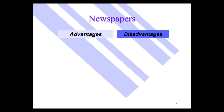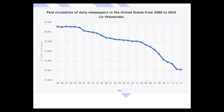Disadvantages: one disadvantage is the quality of printing is not as good as, say, magazines — although newspaper color has gotten much better. Certainly a major disadvantage is that circulation is going down and down and down. Fewer and fewer people are reading newspapers. If you look at this graph, you see that newspaper circulation is down by almost 50% over the past 30 years.